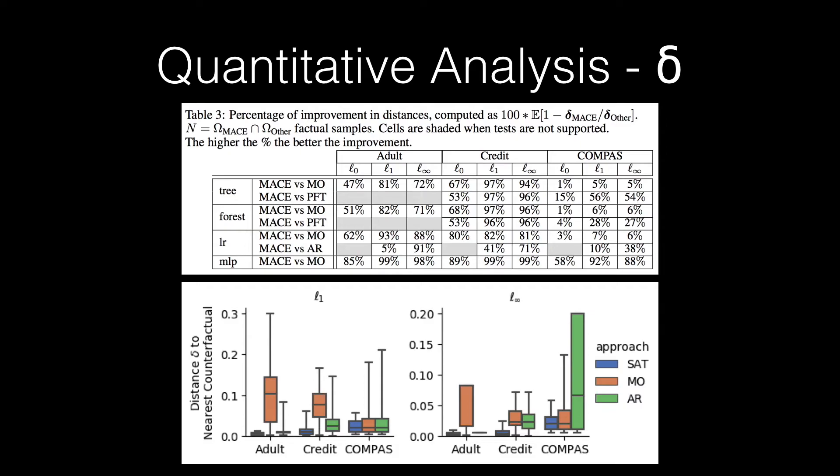We observe that MACE results in significantly closer counterfactual explanations than competing approaches, with an average decrease in distance of 70% for Adult, 75% for the Credit dataset, and 20% for the Compass datasets. This concludes that counterfactuals generated by MACE would require significantly less effort on behalf of the affected individual to achieve recourse.